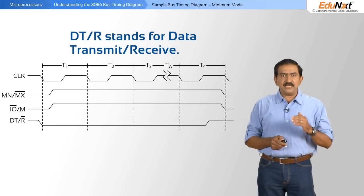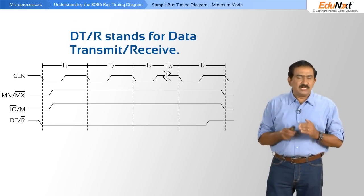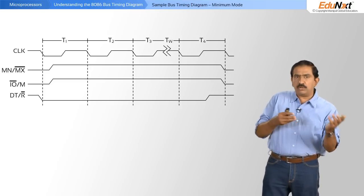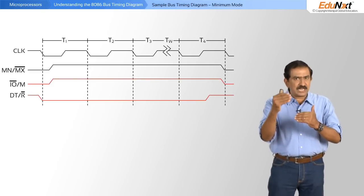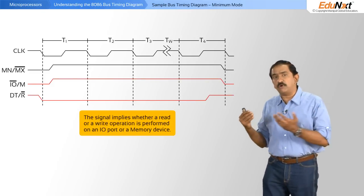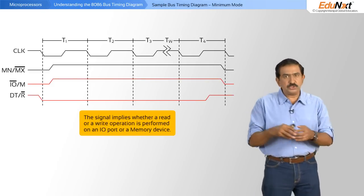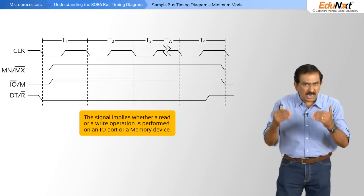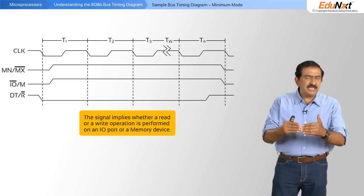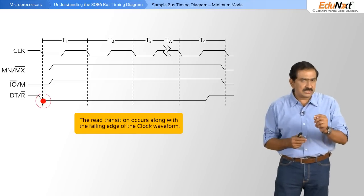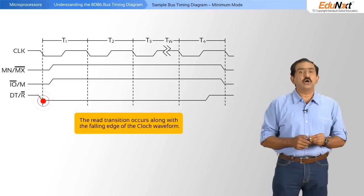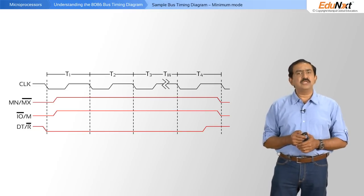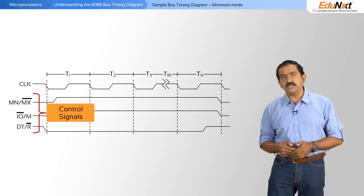The third control line is something called read or write, and this tells you whether you are performing a read or a write operation. Along with IO slash M, it tells you whether you are performing a read or write operation on an IO port or a memory device. In this case you are reading, because it is a read bar and you are reading a memory device. The read transition occurs along with the falling edge of the clock waveform. All three signals together are typical control signals that you would find in microprocessors.